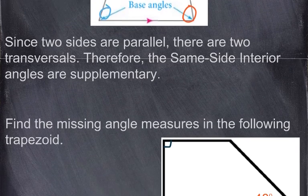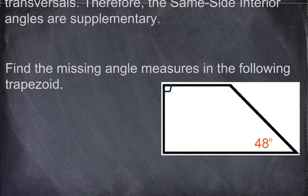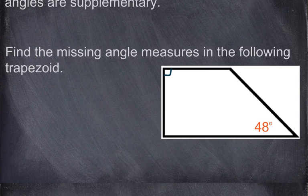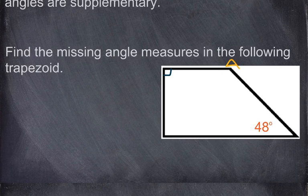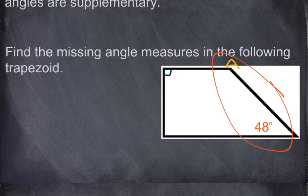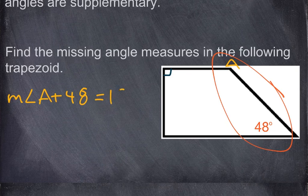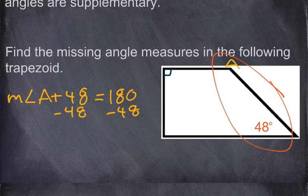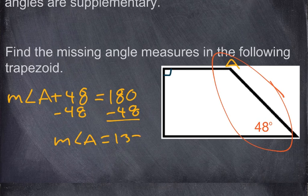Using that, we have to find the missing angle measures in the following trapezoid. We're given 48 degrees and a right angle. To find angle A — the top right one — notice it's on the same side of the transversal. So on the right side, those two angles add up to 180 degrees. The measurement of angle A plus 48 degrees equals 180. If we subtract 48 from both sides, angle A is equal to 132 degrees.